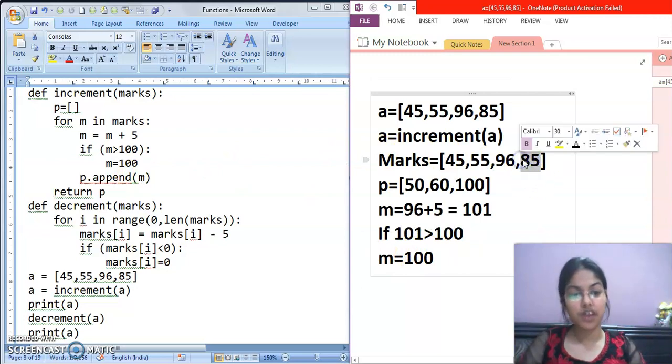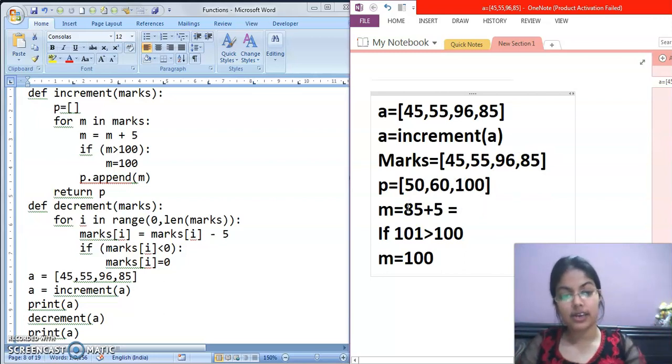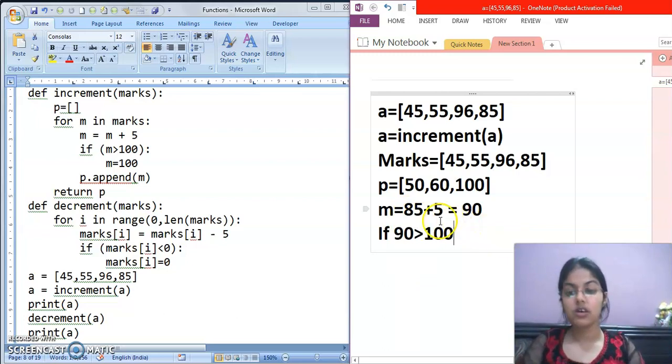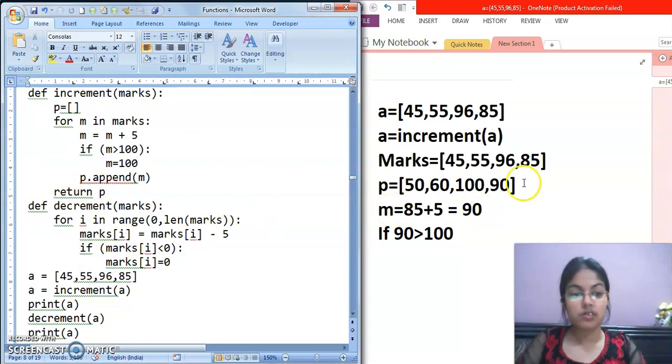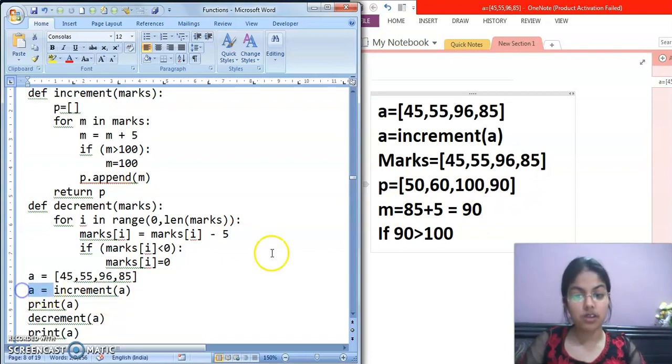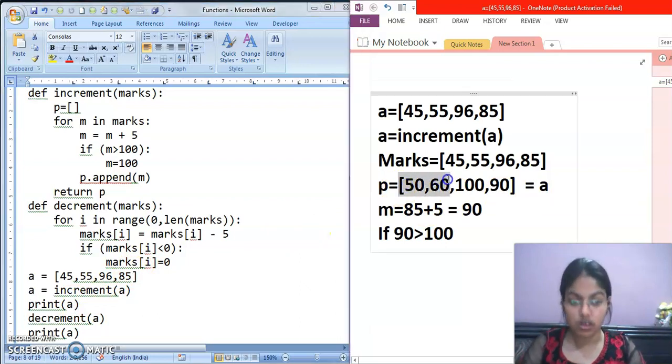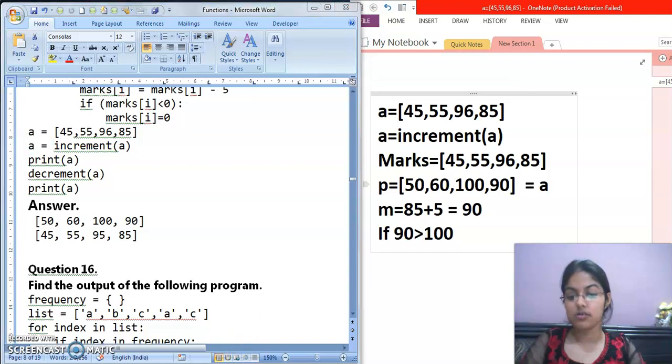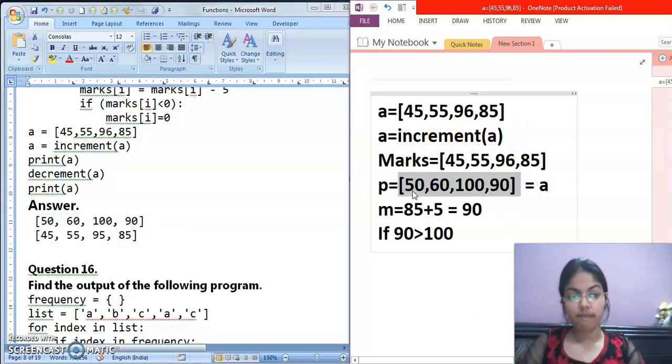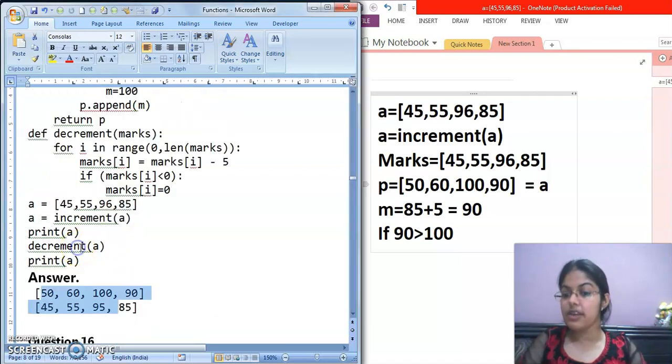Similarly for next value 85. 85 plus 5 will be 90. 90 greater than 100. Condition false, 90 greater than 100. Condition will be false. So M equals to 100 will not get executed. So append to the whole list mein hoga, comma 90. Return P. That means this value will return. And where? We called from A. That means A equals to, A variable tha. So now this list is equal to A. And print A. Now this list will be printed. This one: 50, 60, 100 and 90. This list will get printed.